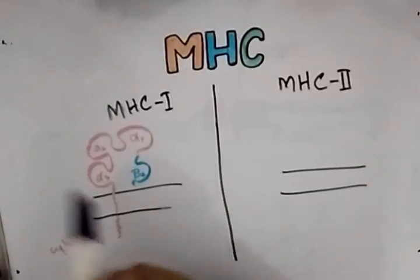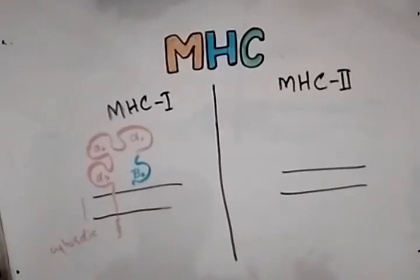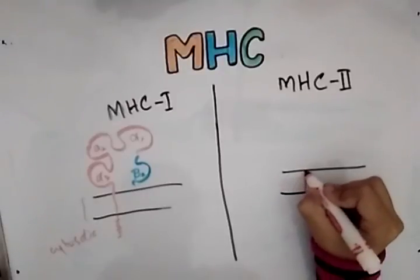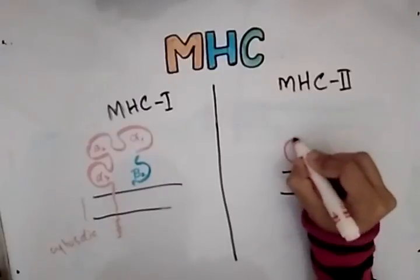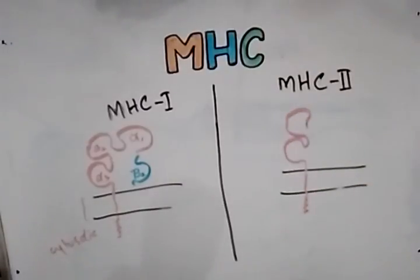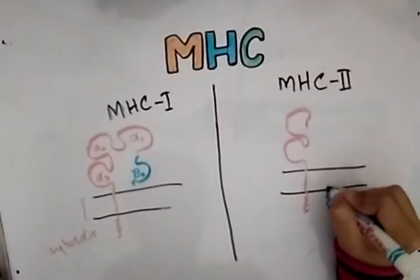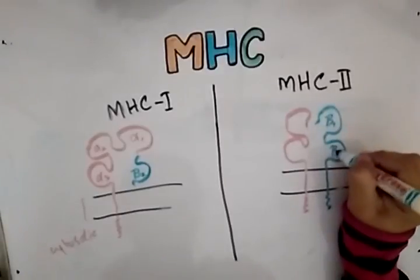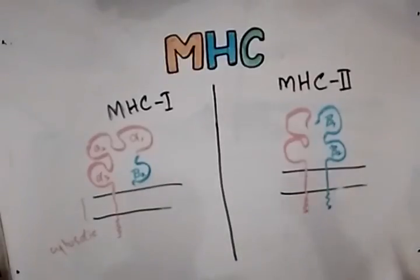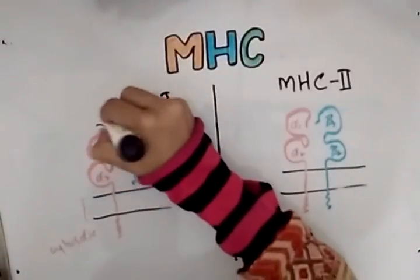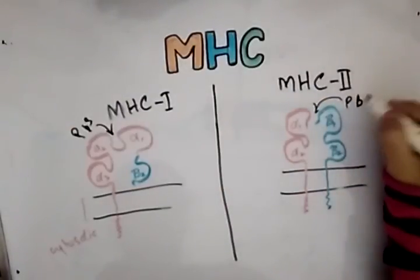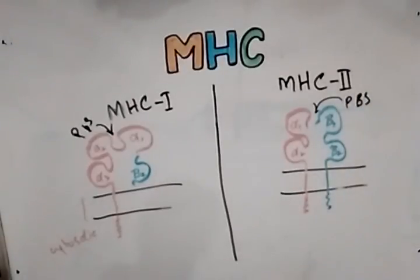In MHC2, the alpha chain and beta chain are both present and of similar structure. MHC2 has a cytosolic region, a transmembrane region, and an extracellular region. The beta chain has beta-1 and beta-2 subunits, and the alpha chain has alpha-1 and alpha-2 subunits. The top side is the peptide binding site, where any antigen or epitope binds.